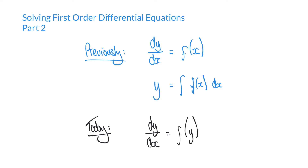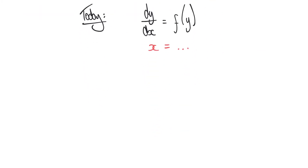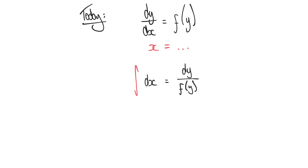In this video, we're going to try and find a solution in the form of x equals. In order to do that with a first-order differential equation in this form, some rearrangement is required. Rather than dy/dx equals f(y), we're going to say that dx equals dy over f(y). The reason for this rearrangement is that all x terms are on one side and all y terms are on the other, so we can integrate. The left-hand side will be the integral with respect to dx, equal to the integral of dy over f(y).